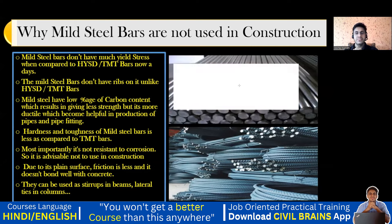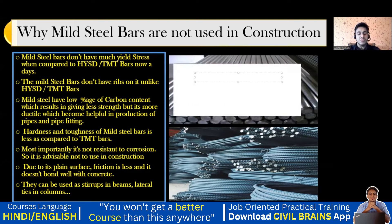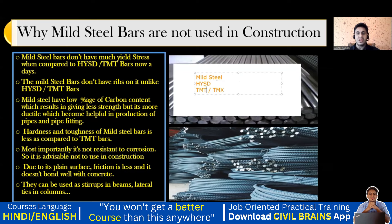Previously we used to get mild steel bars. After that we started to make use of HYSD rebars, then we started to make use of TMT rebars, and now nowadays we also get TMX. So the progression is: mild steel, then HYSD rebar, and now we are getting TMT or TMX bars.